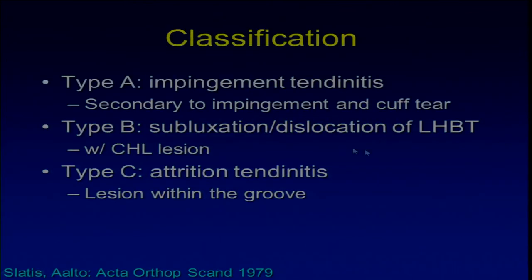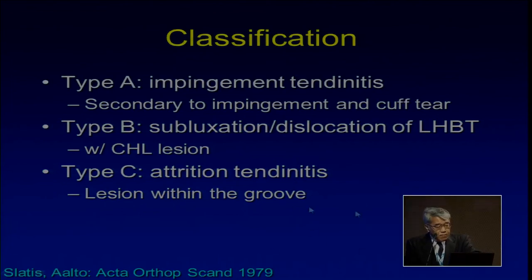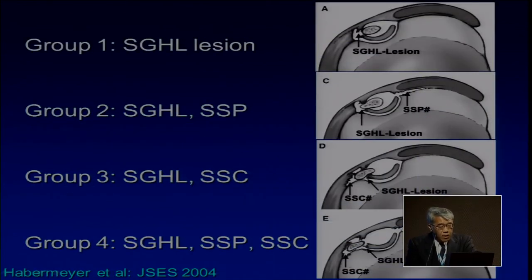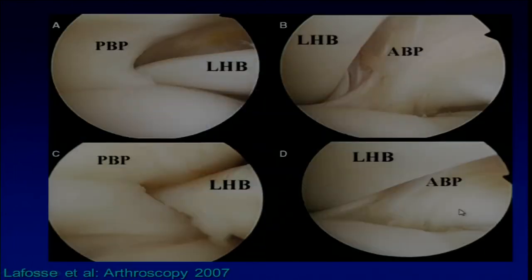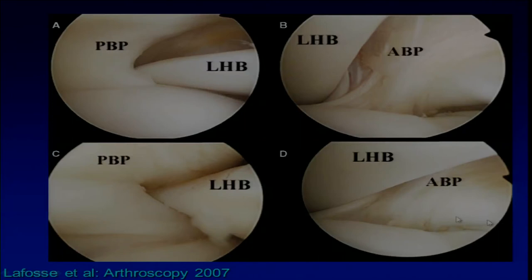Regarding classification: the Type A, B, C classification is based on pathology — Type A is inflammation, Type B is instability, Type C is mechanical attrition. Habermeyer incorporated instability of the tendon in terms of injury to the SGHL or cuff tears into Groups 1 through 4. Laurent Lafosse introduced posterior instability of the long head of the biceps, noting that with the arm in external rotation the biceps goes anteriorly and with internal rotation it goes posteriorly, incorporating this posterior instability into his classification.